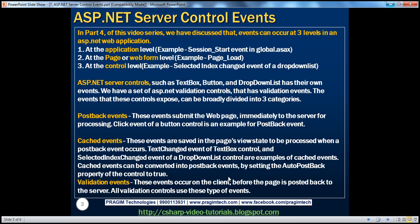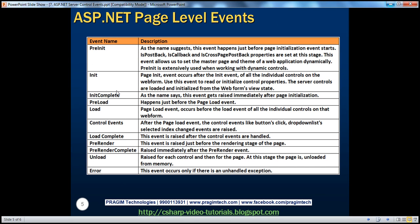So, until now, we've understood that ASP.NET server controls expose three types of events: post-back events, cached events, and validation events. In the previous session, we saw events at the web form level — pre-initialization, init, init complete, and others. Control events actually happen after the page load event. Examples of control events include the click event and text-changed event. Those events happen after the page load event and before load complete.